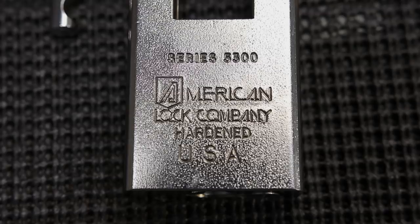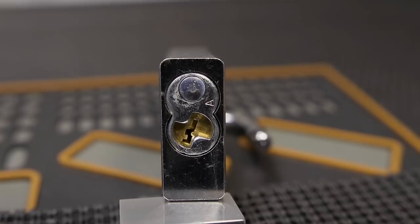As all American Locks come, it comes with the typical American Lock Core that comes pinned up to five pins, which can easily be expanded up to a sixth pin.